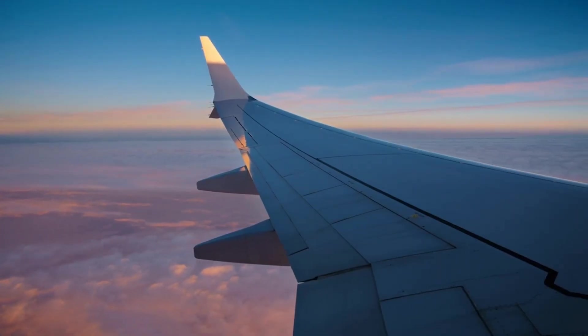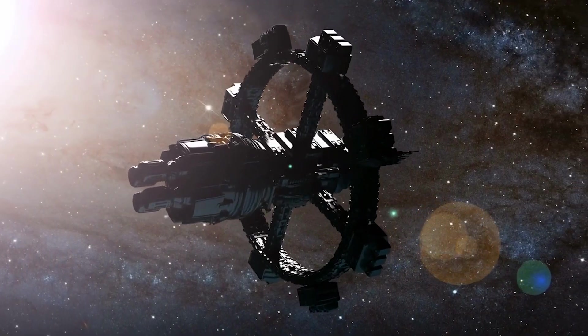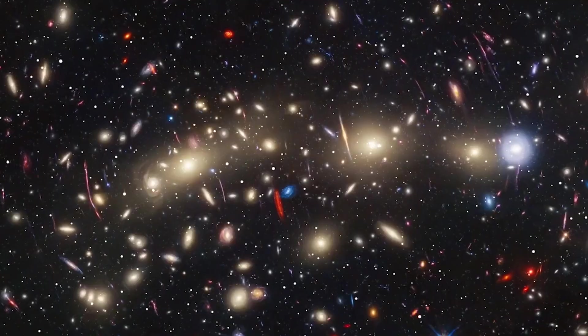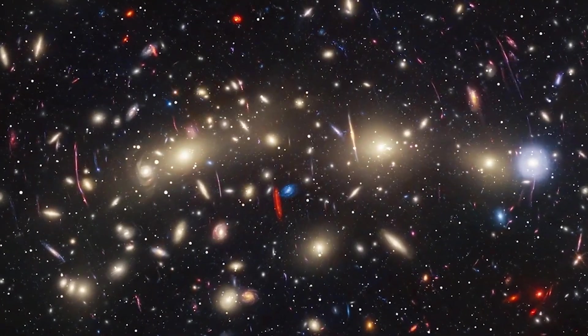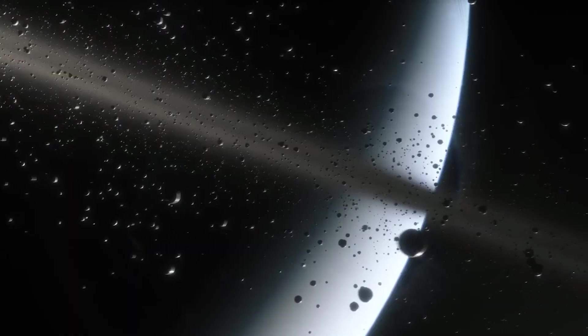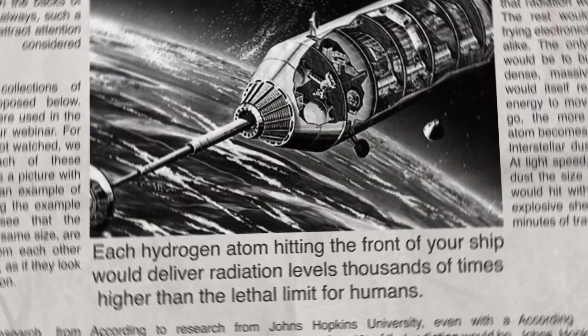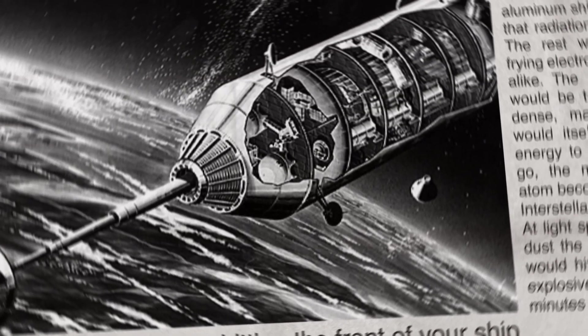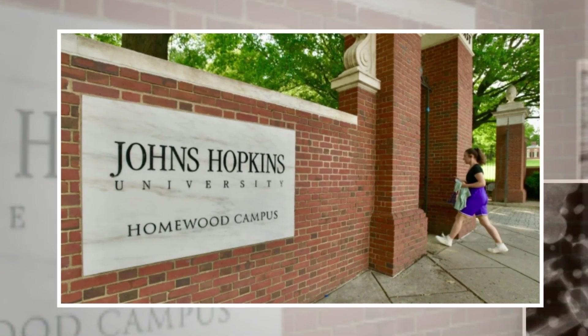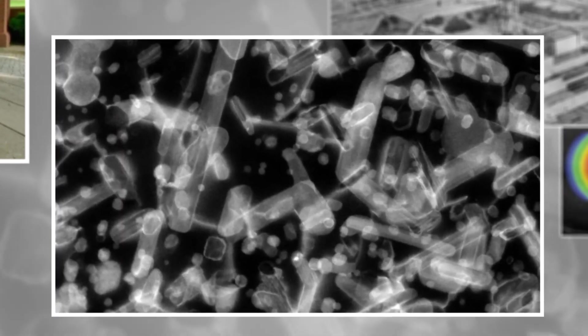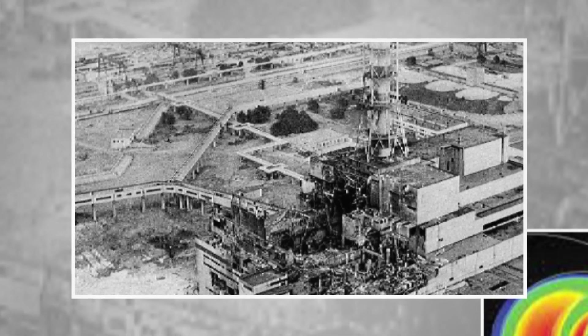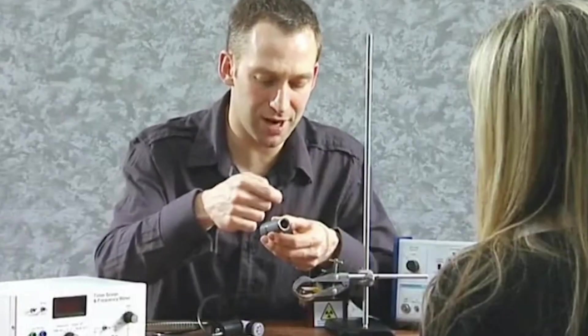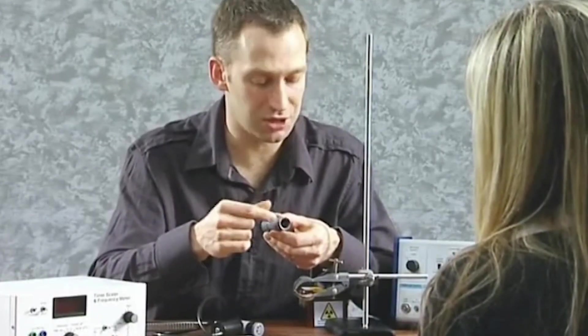Now, let's consider the practical side. Even if we could build a ship fast enough, there's another problem. Space itself isn't empty. There are hydrogen atoms, bits of dust, and stray particles floating everywhere. At low speeds, they're harmless. But at near-light speeds, they become bullets carrying enough energy to vaporize matter on impact. Each hydrogen atom hitting the front of your ship would deliver radiation levels thousands of times higher than the lethal limit for humans. According to research from Johns Hopkins University, even with a 10 centimeter thick aluminum shield, less than 1% of that radiation would be stopped. The rest would pass through, frying electronics and living tissue alike.